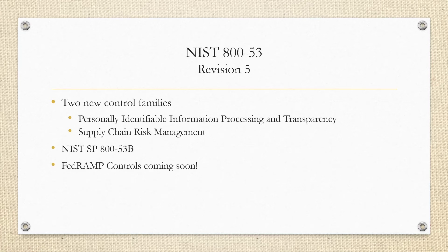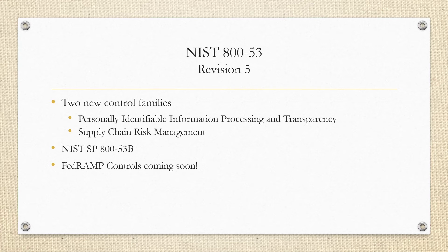So what's new specifically? There are two new control families. The first is Personally Identifiable Information Processing and Transparency. This family really focuses on addressing privacy risk and management — really focus on your control baseline and what you're trying to achieve as an organization before you implement all these controls. The second new family, which is a big one, is Supply Chain Risk Management.